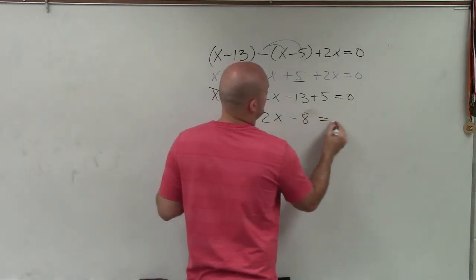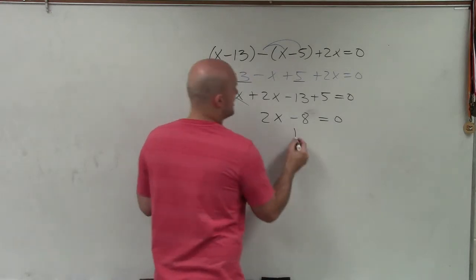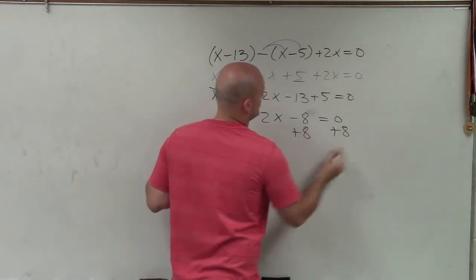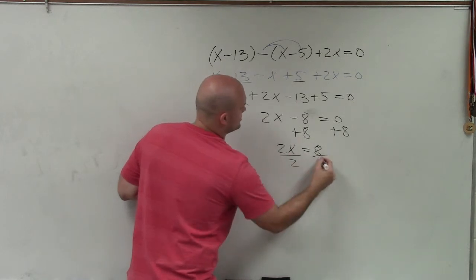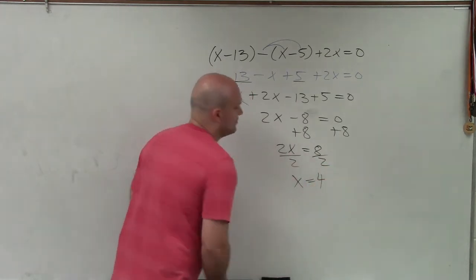Now to solve, I can just add 8 to both sides, and I have 2x=8, divided by 2 divided by 2. x=4.